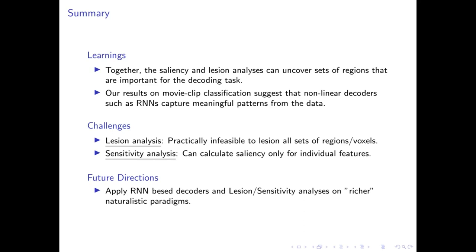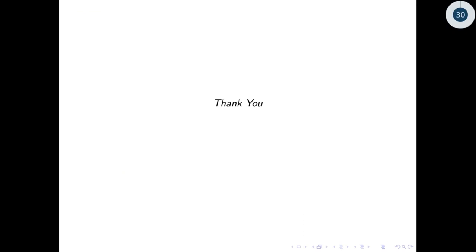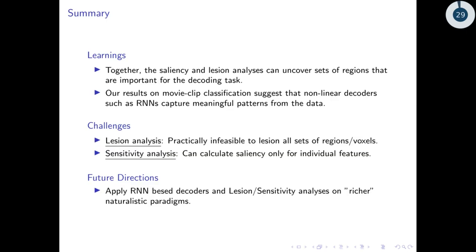Among some challenges, it is practically infeasible to lesion all sets of regions and voxels. Therefore, we need smarter ways of finding sets of important regions or voxels. On the other hand, saliency analysis calculates saliency only for individual features and we require ways to calculate saliency for groups of features. Finally, the movie watching data was quite simplistic. Therefore, we need to apply RNN-based decoders and lesion sensitivity analysis on richer naturalistic paradigms in order to utilize the complete capabilities of such techniques.